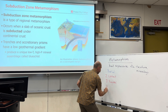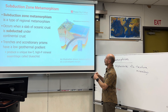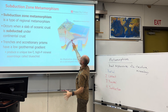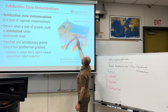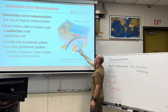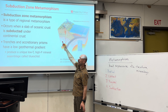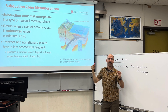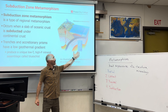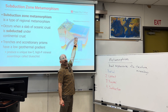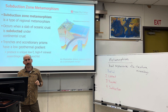Subduction zone metamorphism. This is another type of regional metamorphism, but more specific to a subduction zone. In the subduction zone, we have contact metamorphism from rising igneous intrusions, and an accretionary wedge with very high pressure, giving us a unique type of rock called blueschist. There are also areas deep in the subducting slab creating regionally altered rocks. Blueschist indicates low temperature, high pressure from the subducting slab — geologic setting.